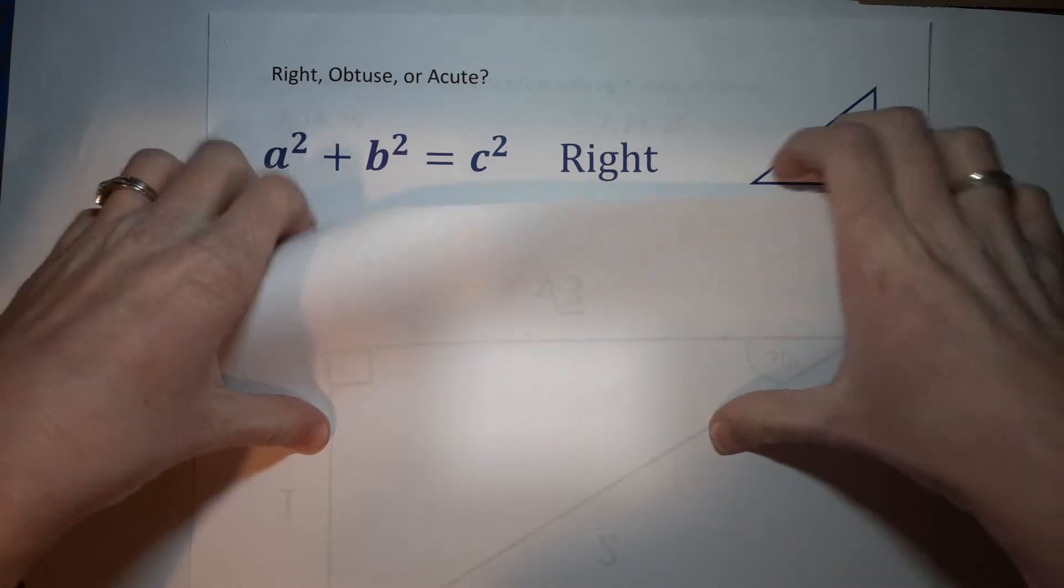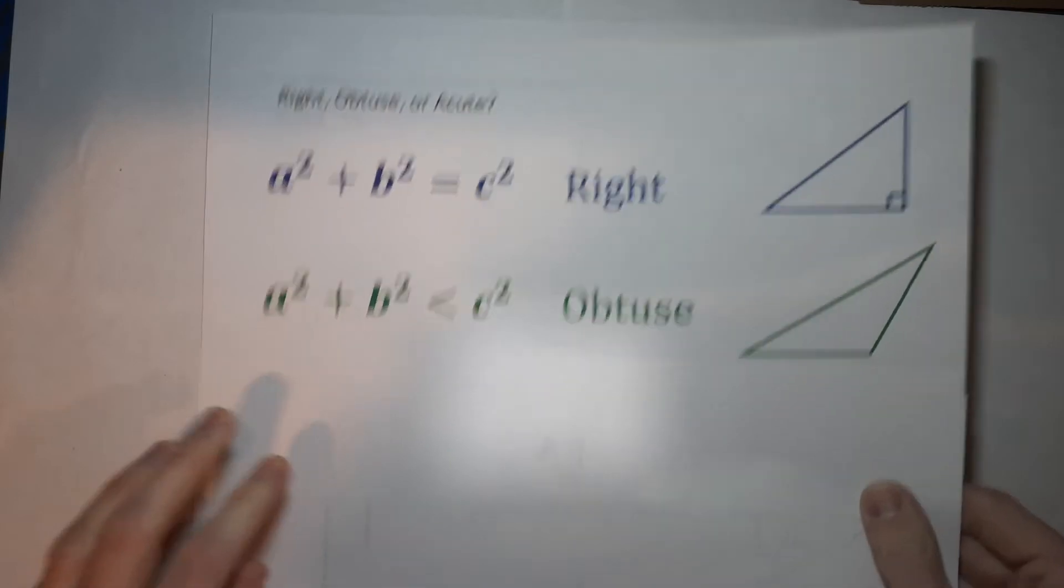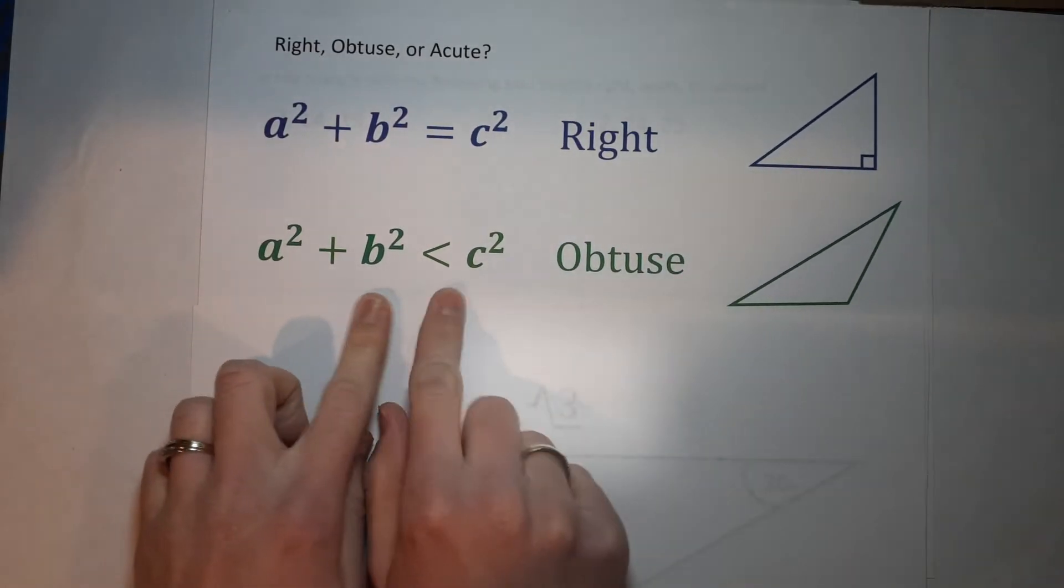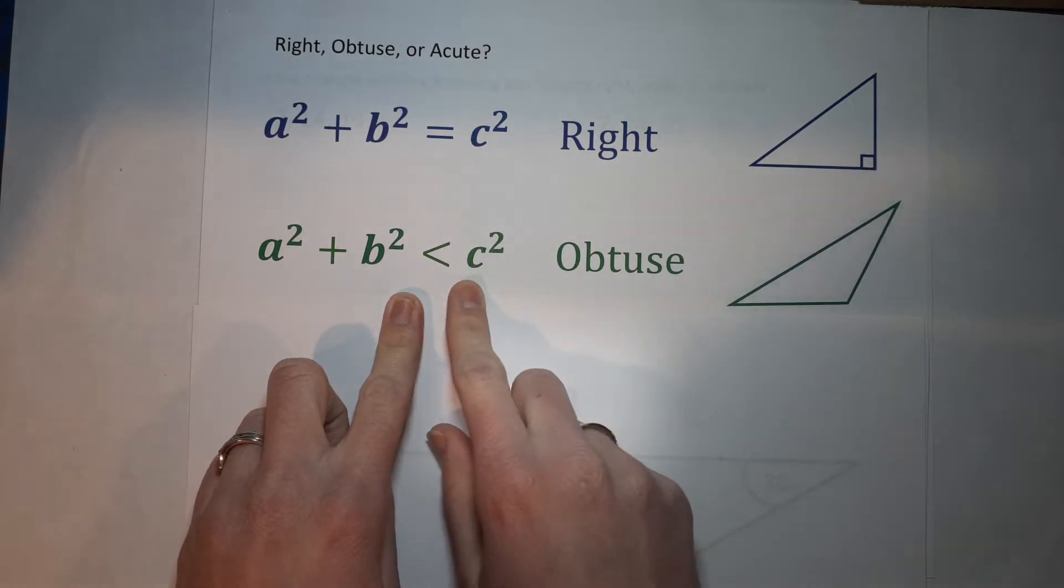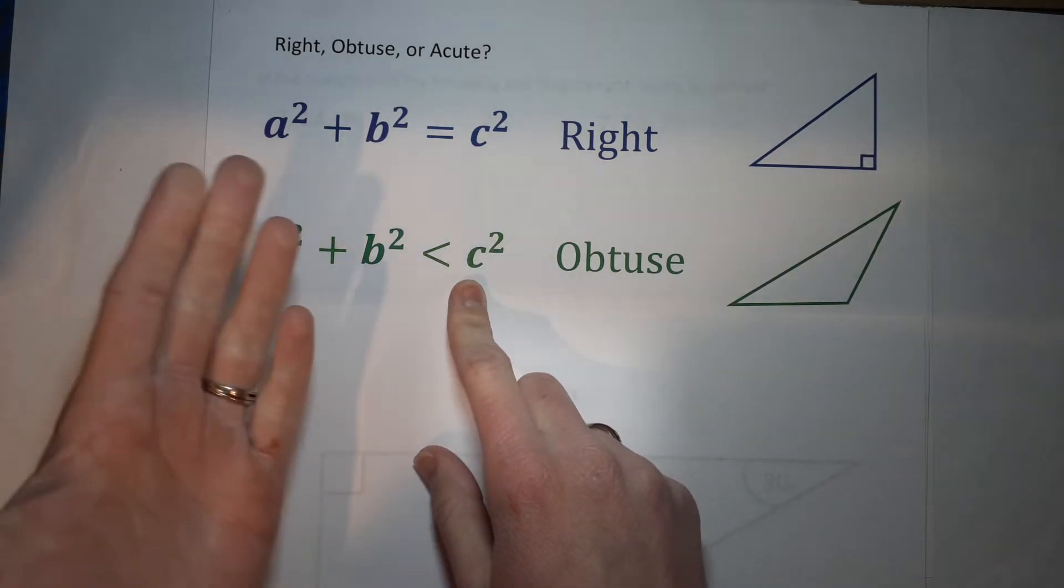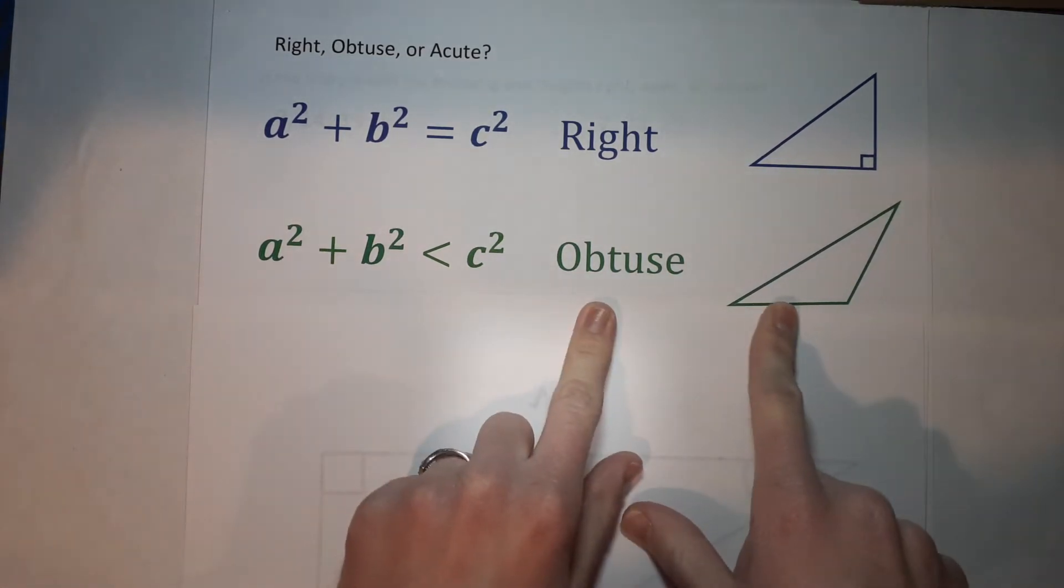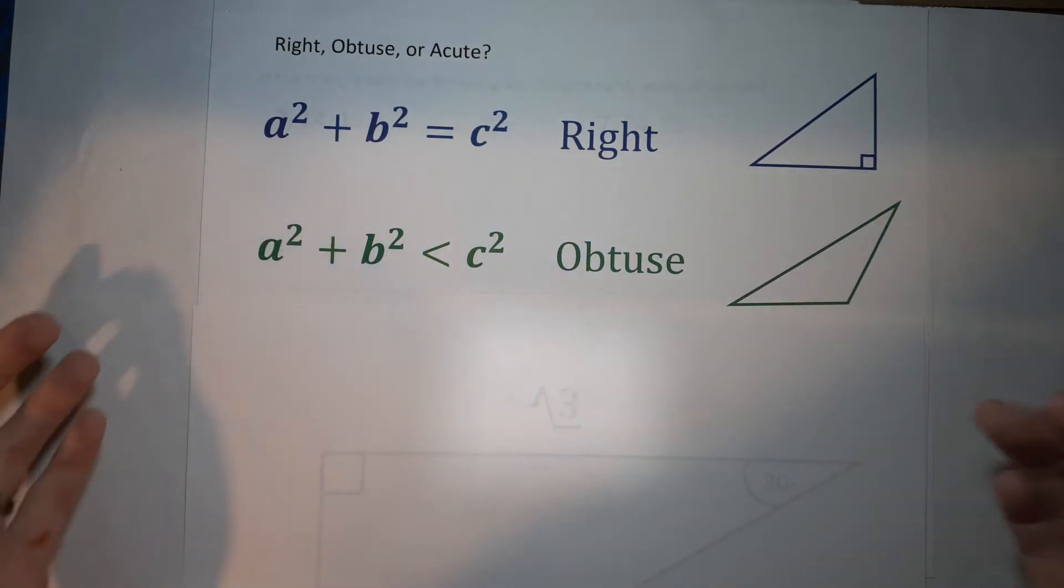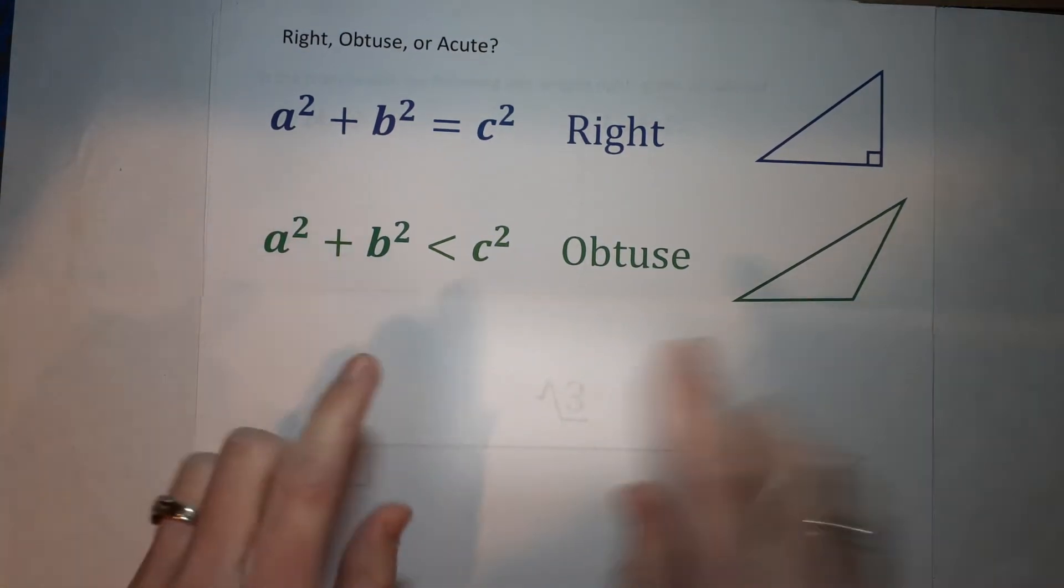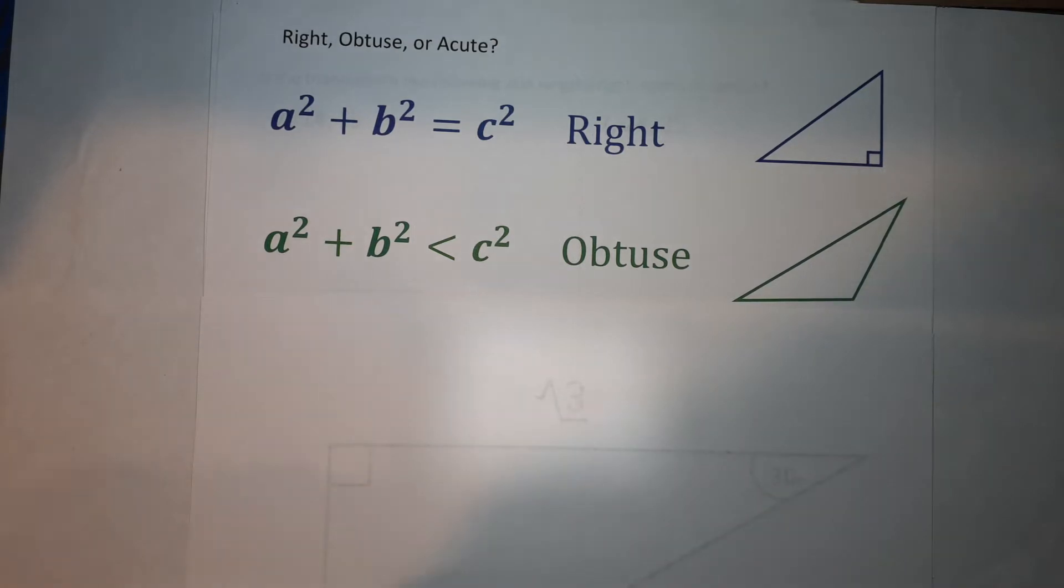If a squared plus b squared is less than c squared, so c squared is bigger, which is the biggest number, is bigger than the two smaller ones squared put together, it's an obtuse triangle. If you're like, you've lost me, hold on, I might be making it sound more complicated than it is. So if your c squared is bigger, it's an obtuse triangle, which means there's an angle in it that is larger than 90 degrees.